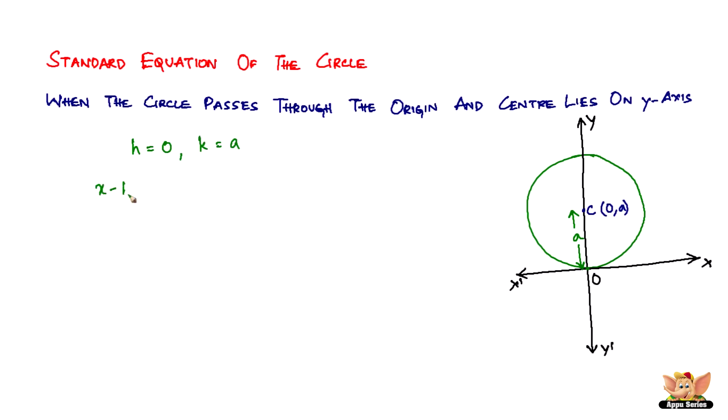So the standard equation is x minus h whole square plus y minus k whole square equals a square, right? In this case h becomes 0. So we have x minus 0 whole square plus y minus a whole square equals a square. So it will be x square plus y square plus a square minus 2ay equals a square. A square cancels and we have x square plus y square minus 2ay equals 0.